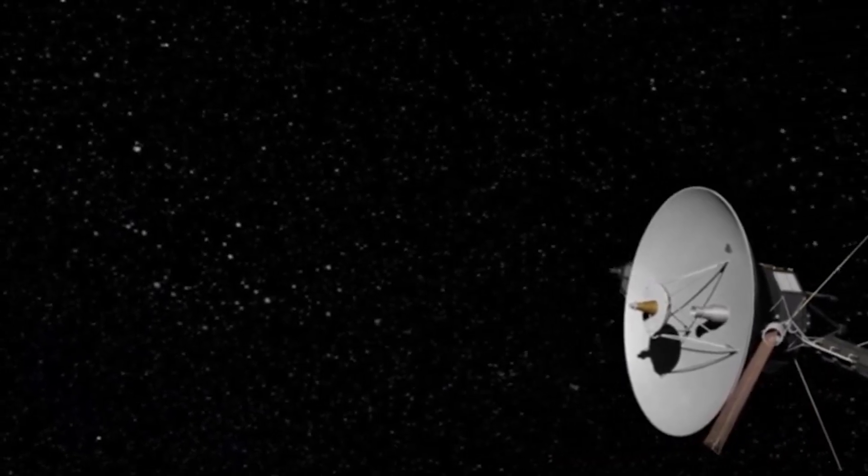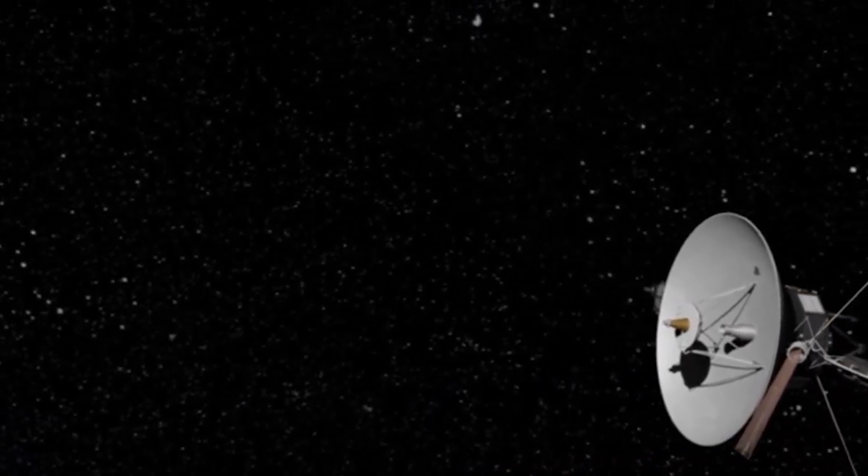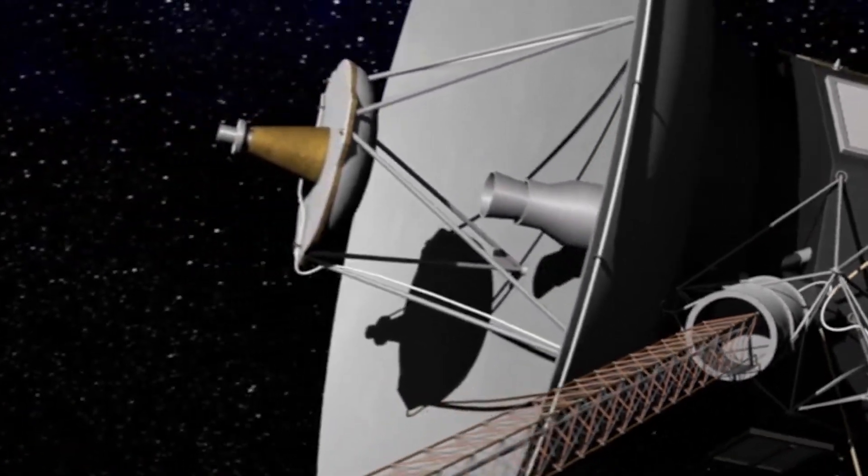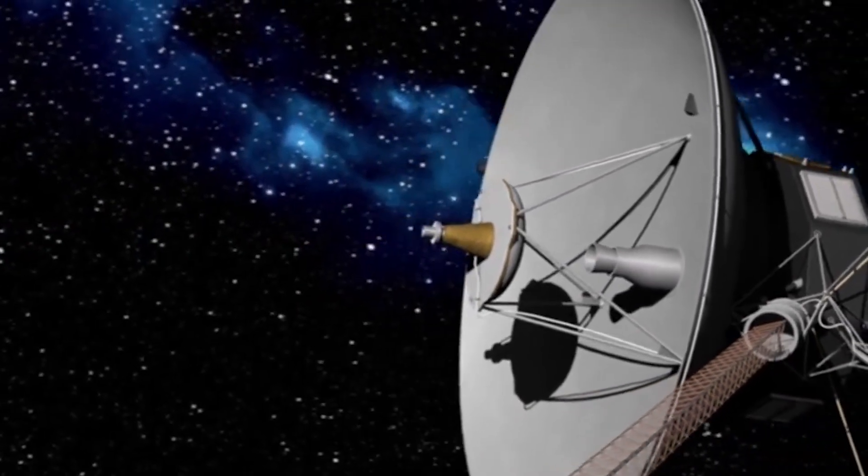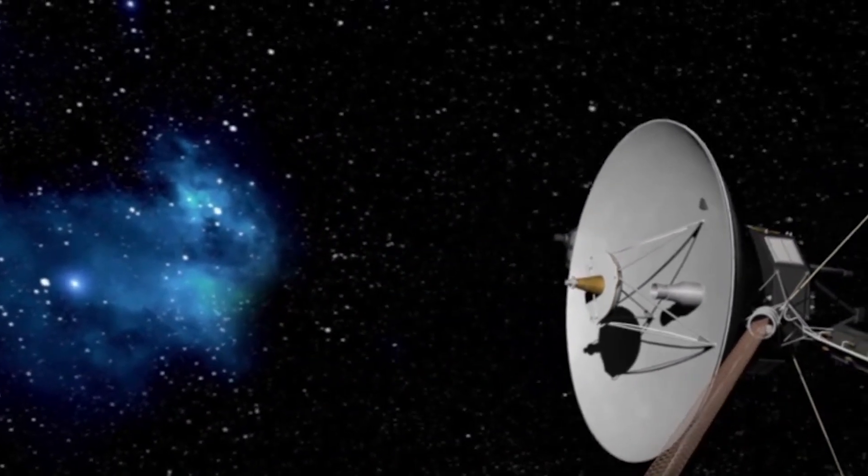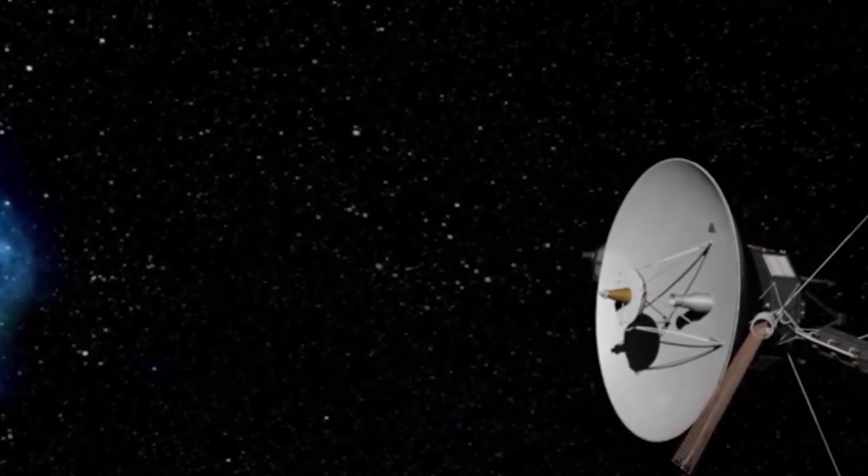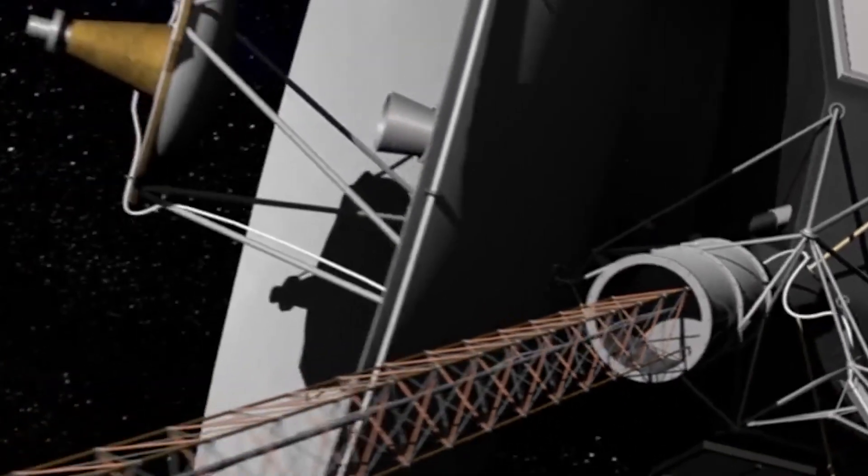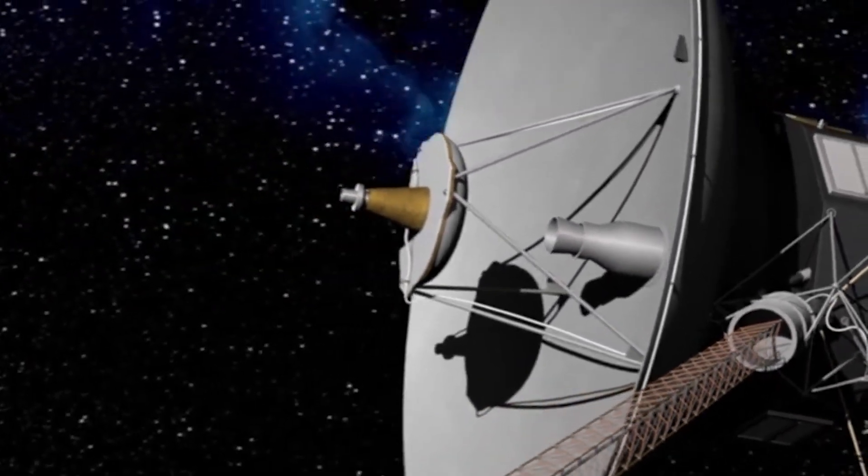And yet, there is a poetic tension here. While Voyager itself will survive, its voice will not. The faint radio transmissions that travel nearly a full day across space to reach us are temporary. They rely on energy, and energy is running out. Once those signals cease, we will no longer have a direct connection to this ambassador. We will only be able to watch the night sky and imagine where it is, moving at nearly 17 kilometers per second into the unknown.